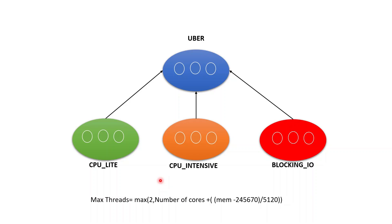Thread switching — the proactor pattern — still occurs. For example, from CPU Light, if the next processor is CPU Intensive, it still switches. The documentation says they still found performance improvements because releasing the thread lets it go back to the pool. Also, a CPU Intensive thread will not switch back down to a CPU Light pool — the CPU Intensive will continue even if the next processor is CPU Light, so that optimization still remains.